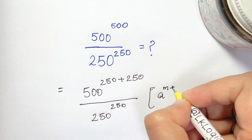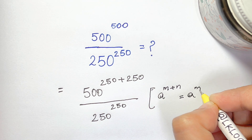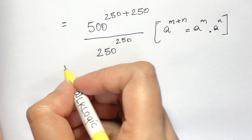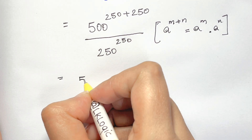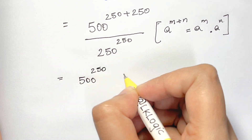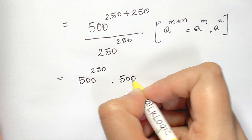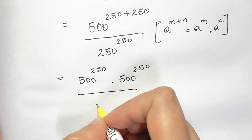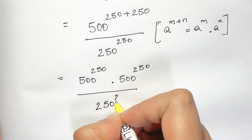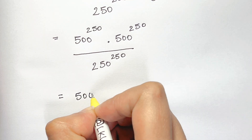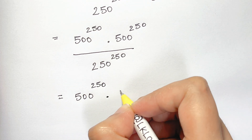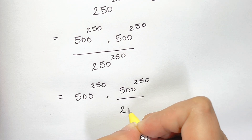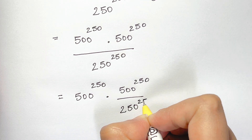The law states: a to the power of m plus n can be split into a to the power of m times a to the power of n. Applying that, we get 500 to the power of 250 times 500 to the power of 250, all over 250 to the power of 250.